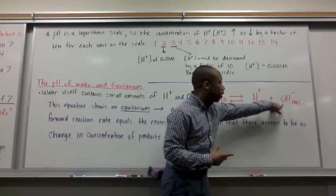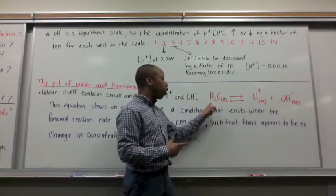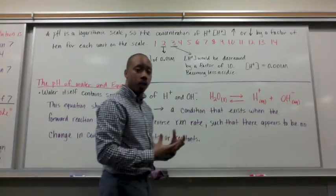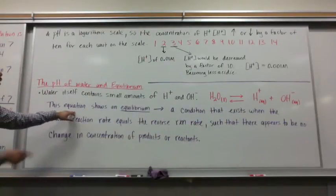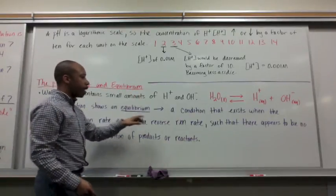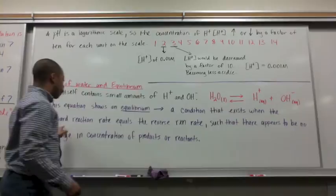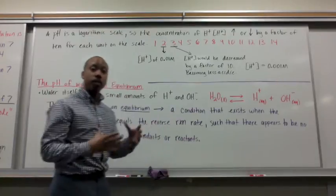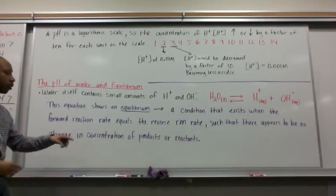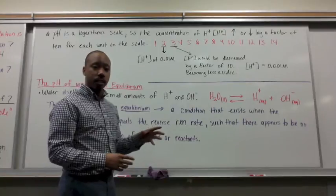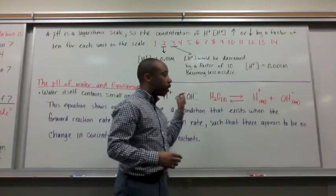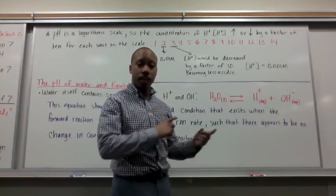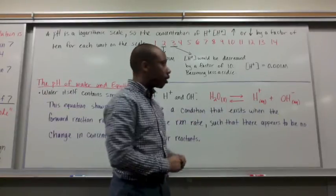And then we see this new arrow here. We've never seen another arrow go backwards before. This means it goes from its ions right back to water, then right back to its ions, then right back to water. It goes back and forth. That situation is called equilibrium. So this equation over here to the right shows an equilibrium. It's a condition that exists when the forward reaction rate equals the reverse reaction rate, such that there appears to be no change in the concentration of products or reactants. So the reaction is going that way, then this way, then that way, then that way. And there seems to be no change in product and the concentration of products or reactants because it's in equilibrium, it's going back and forth.